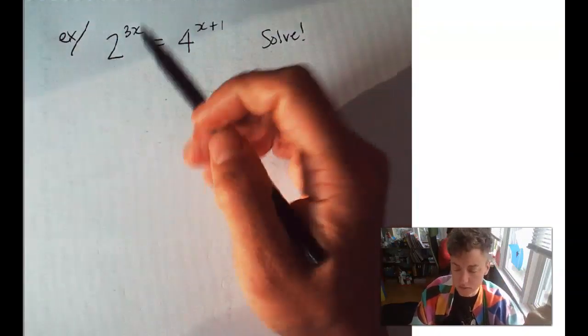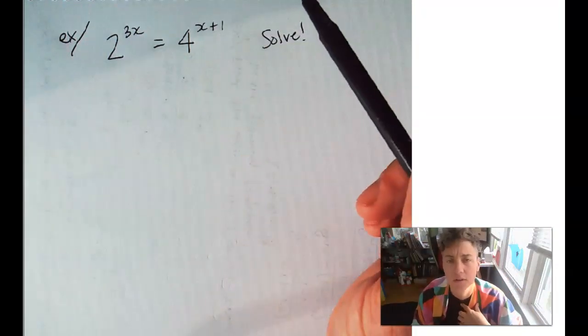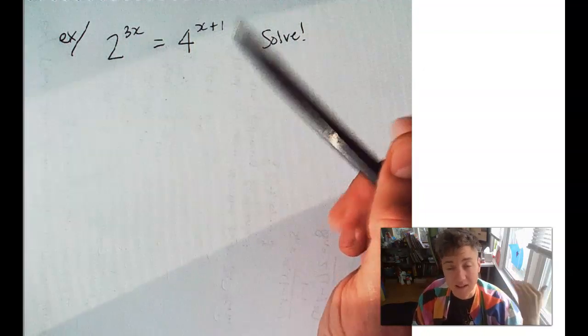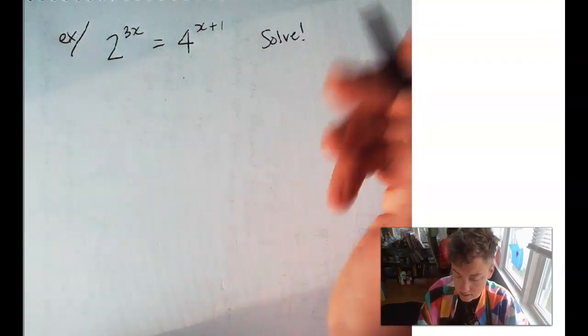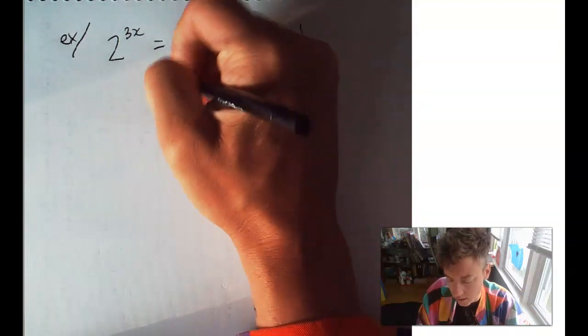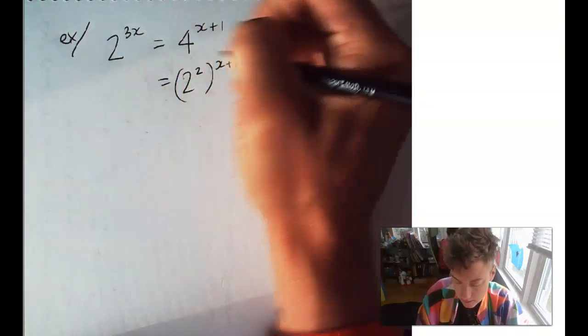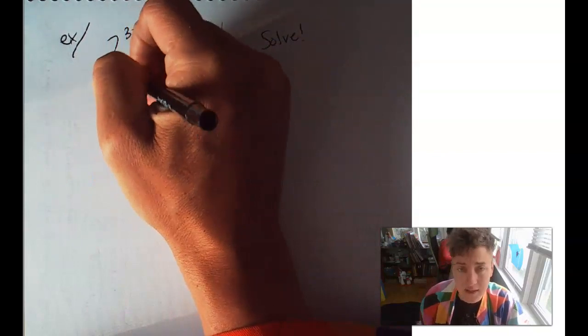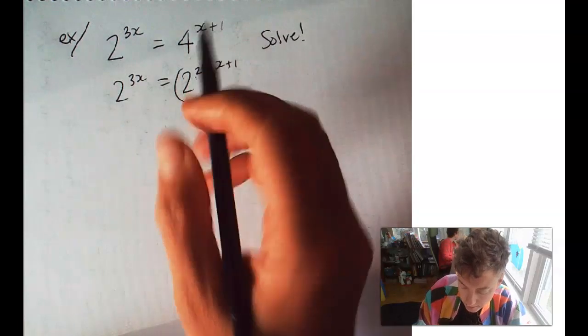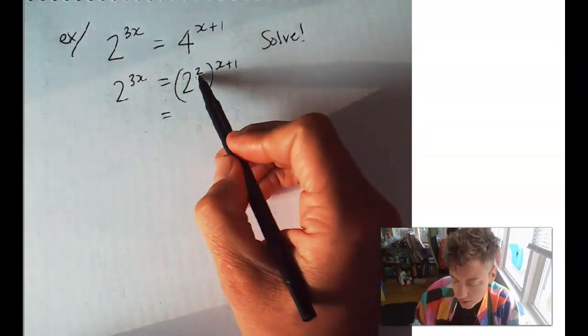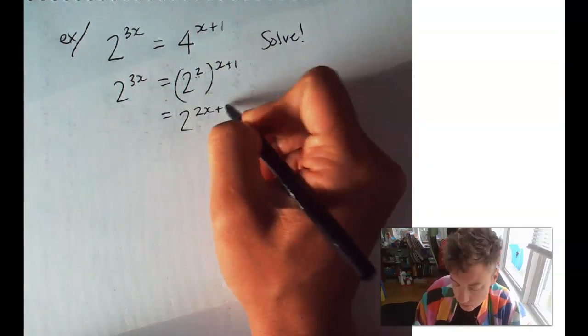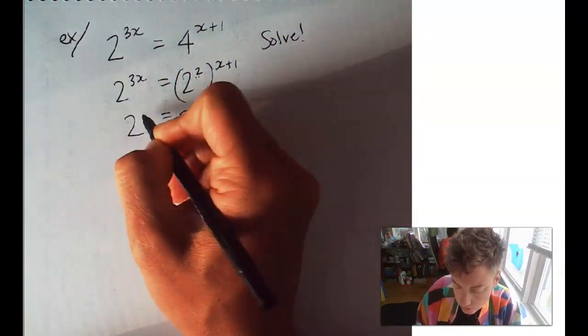We've got 2 to the 3x equals 4 to the x plus 1. We need a common base. Obviously, I'm going to use 2. So, we'll rewrite this 4 as 2 squared to the x plus 1 equals 2 to the 3x. We will multiply these numbers together. 2 times x plus 1 is going to be 2 to the 2x plus 2 equals 2 to the 3x.